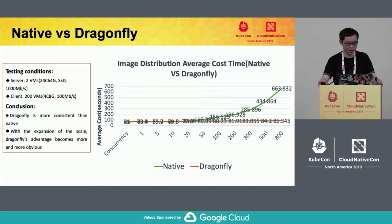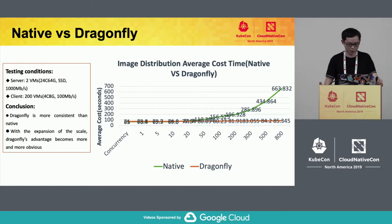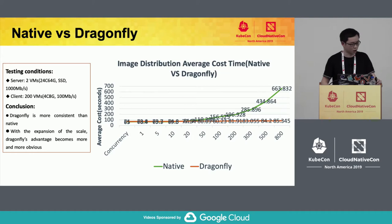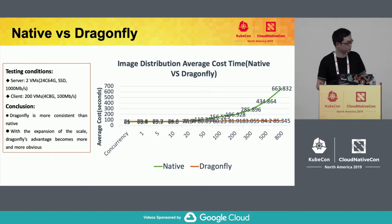To prove its performance, we did a test comparing two image distribution solutions: native Docker pull versus Dragonfly. As concurrency becomes much larger, the load on the central image registry becomes much higher in the native way, so the average download time increases rapidly. But if you are using Dragonfly, the average download time is quite consistent. We can conclude that in this scenario, Dragonfly has better performance than the native way.